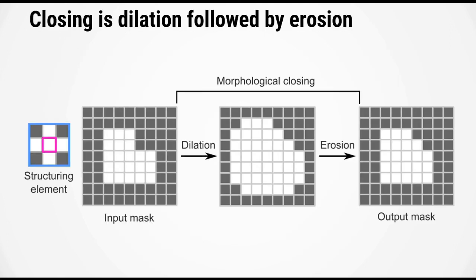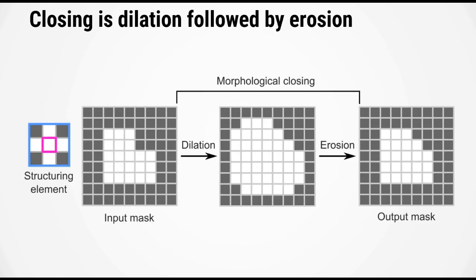All right the next operation that we will look at is morphological closing. Now closing is dilation followed by an erosion. All right so as I said before opening was erosion followed by dilation and closing is basically the opposite. It's dilation followed by erosion.